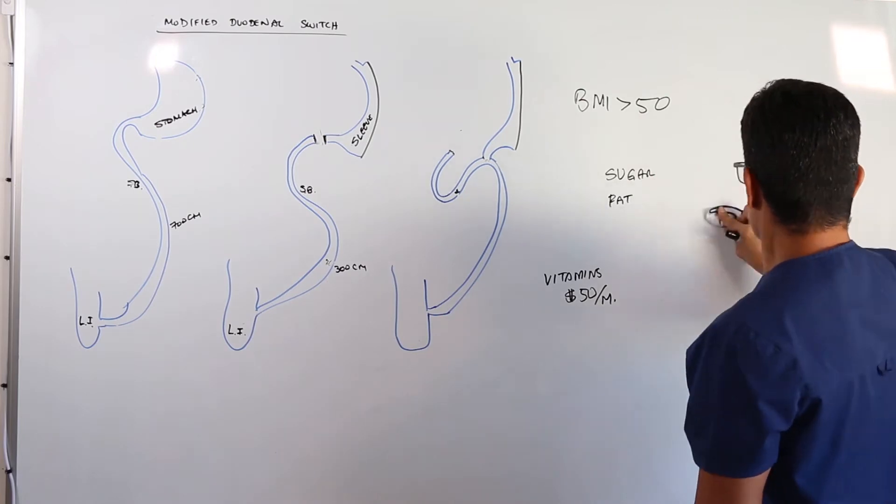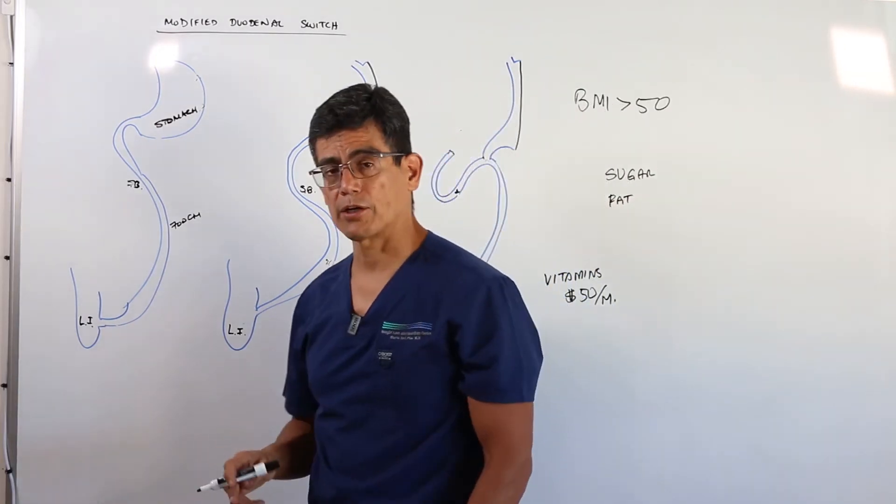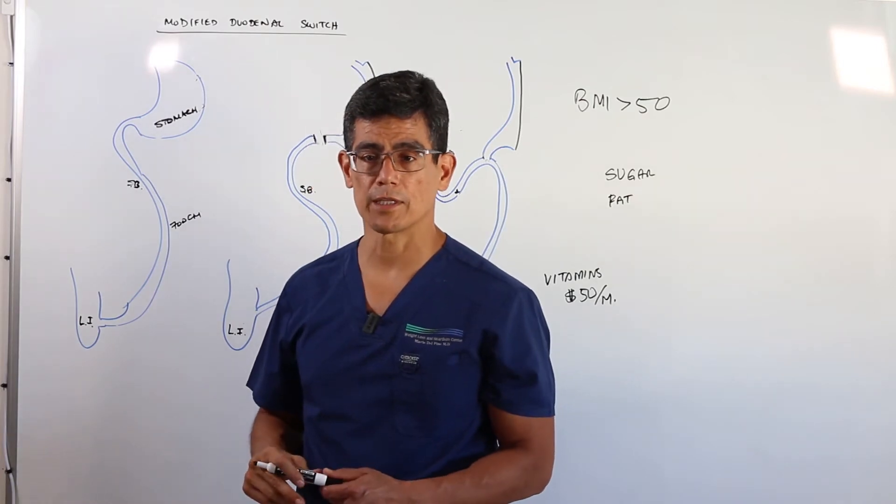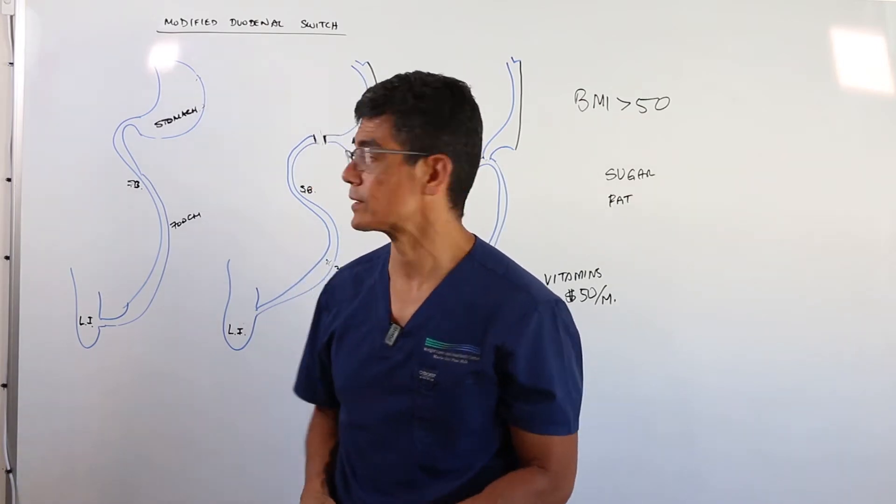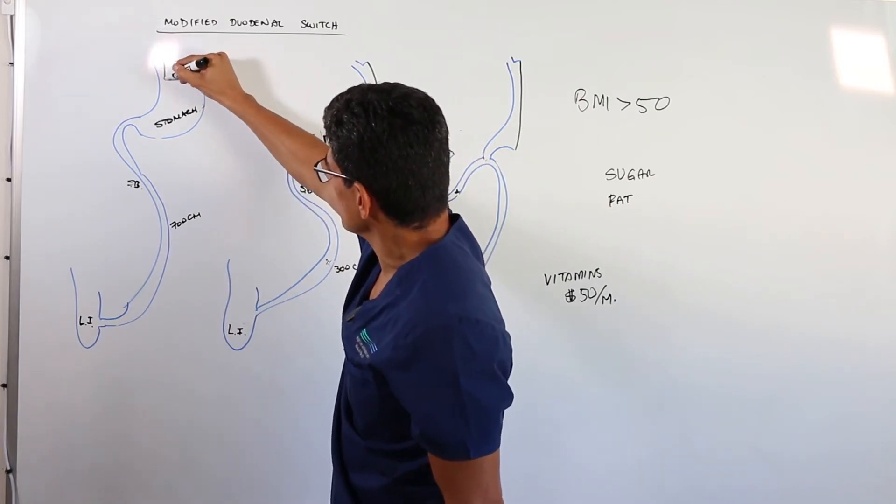How is this operation done? The operation is done with little holes. You're under general anesthesia. It takes about an hour and a half. Most people spend one to two nights in the hospital and recovery is about two weeks. So the first part of the operation involves creating a sleeve gastrectomy.